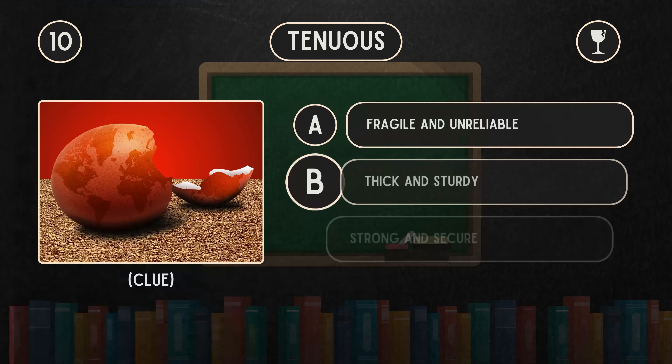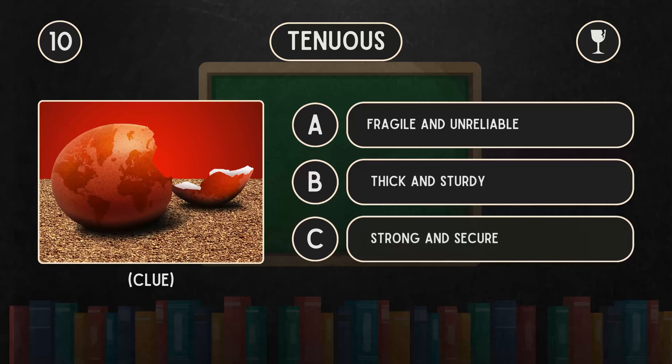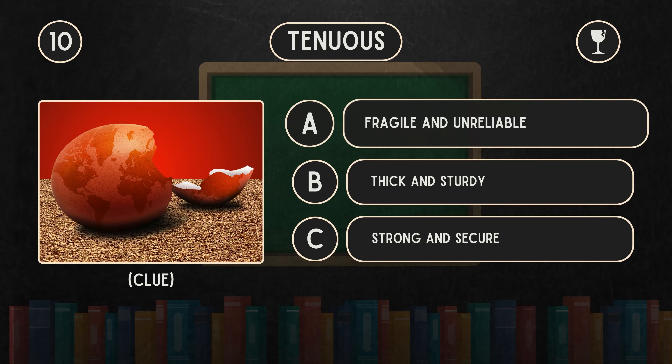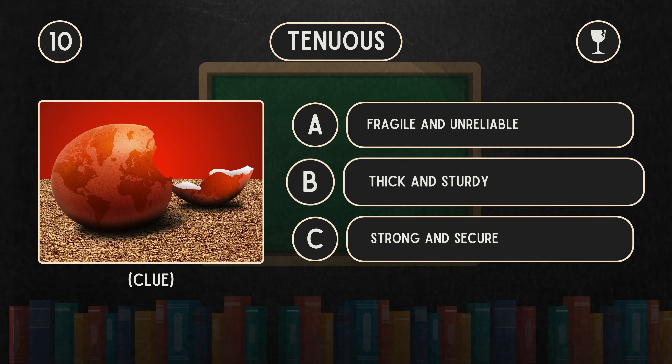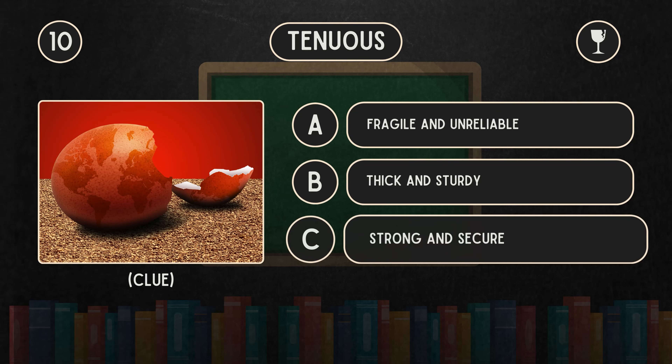What does tenuous mean? Is it A: Fragile and unreliable. B: Thick and sturdy. C: Strong and secure.